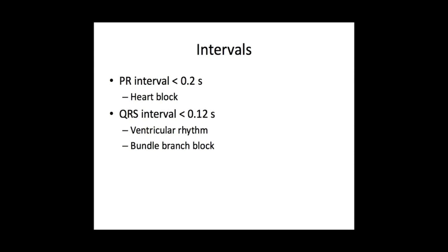After you've had a look at the rate, the rhythm, and the axis, you then want to look at intervals. Most often you'll see derangements in either the PR interval or the QRS interval, and sometimes even both. A normal PR interval should be less than 0.2 seconds, and a normal QRS interval needs to be less than 0.12 seconds. If you see a PR interval greater than 0.2 seconds, you think about heart blocks. If you see a QRS interval greater than 0.12 seconds, you need to think about ventricular rhythms and also the phenomenon of bundle branch block.